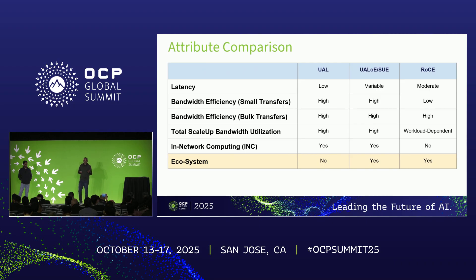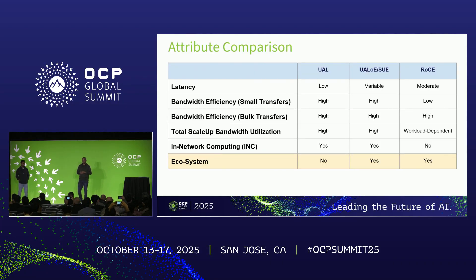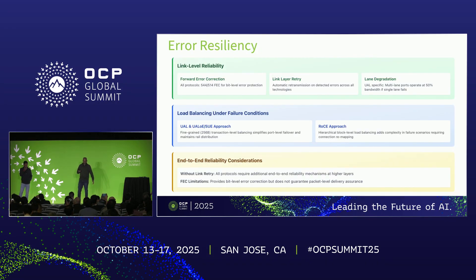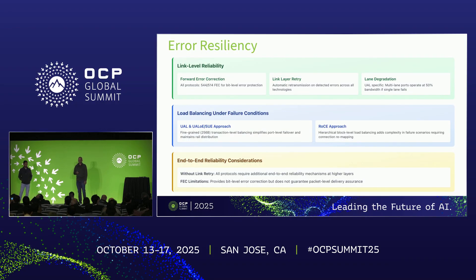From the attributes perspective, one of the biggest things is network collectives. Network collectives are inherently supported in memory semantics for UAL. For UAL over Ethernet, we need standardization to get there. For RoCE, it's pretty hard to do any in-network computing operations because of the connection-based overhead. From the ecosystem point of view, UAL is a new upcoming standard so the ecosystem is not yet there, but for Ethernet it is an established ecosystem. For error resiliency — on lane degradation, when we have two lanes between an accelerator and the switch and one lane dies, we can still operate at 50% bandwidth. Without link-layer retry, we need transport-level end-to-end reliability, and FEC has its own limitations.